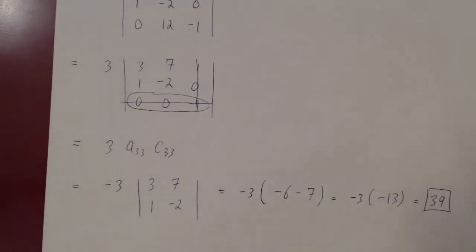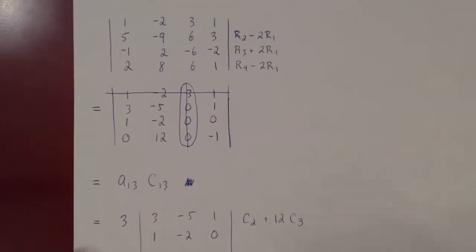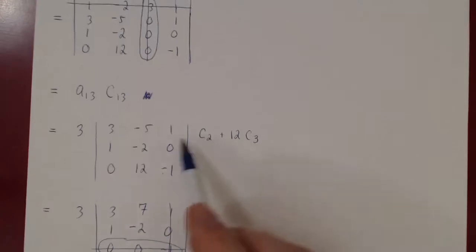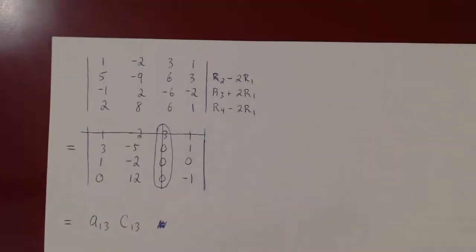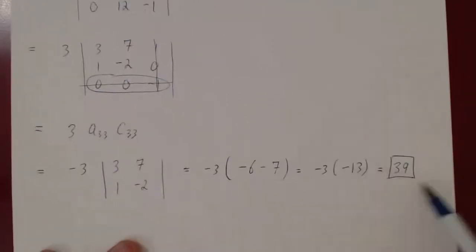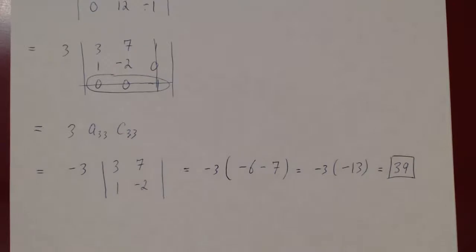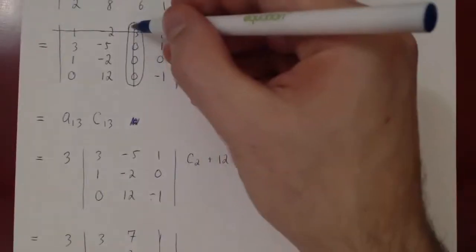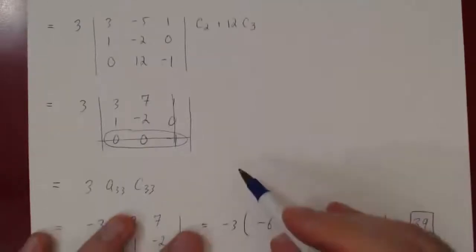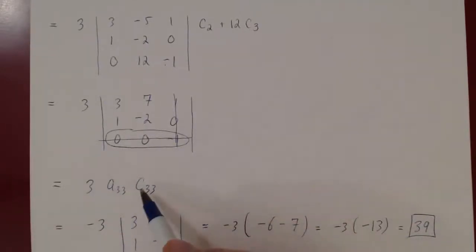And we have the determinant of this 4x4 matrix: 39. Look at how much work was involved — it really wasn't that bad. If you're a skeptic, try finding the determinant with cofactor expansion directly without introducing zeros, and you'll appreciate how slick using column or row operations actually is.